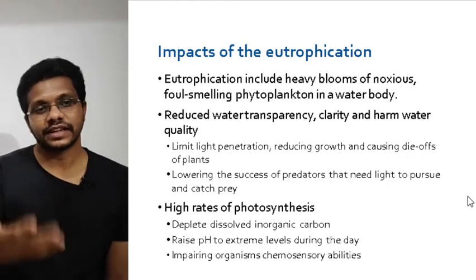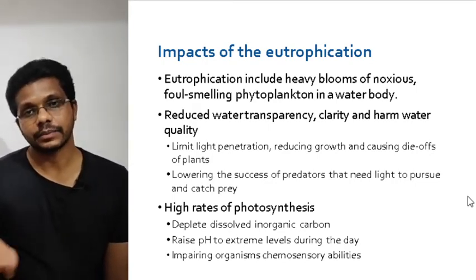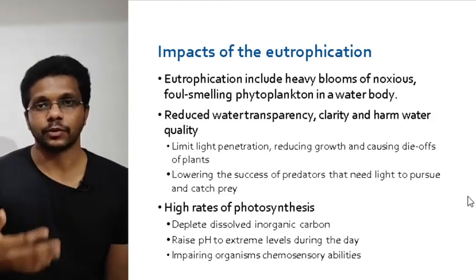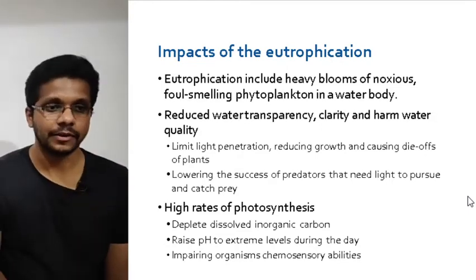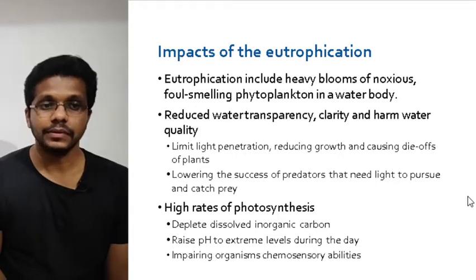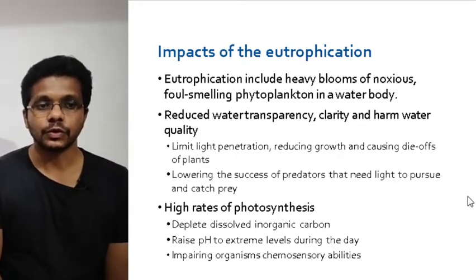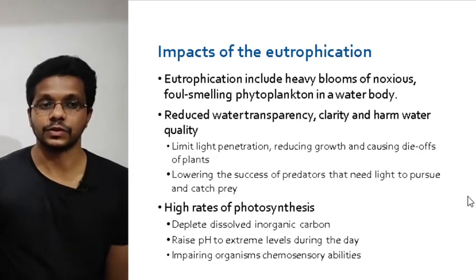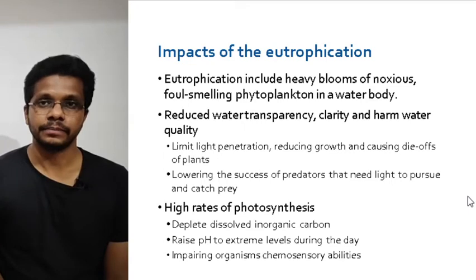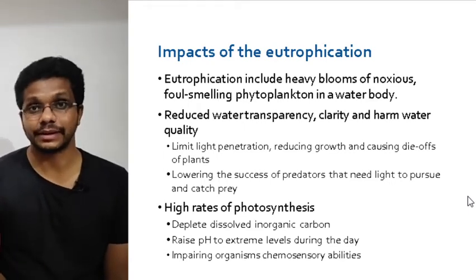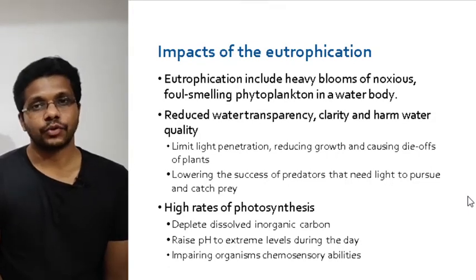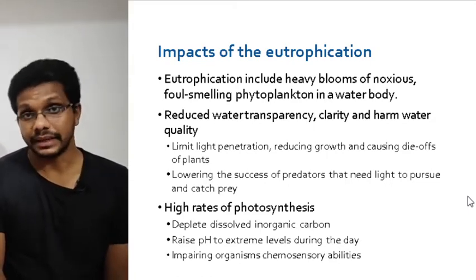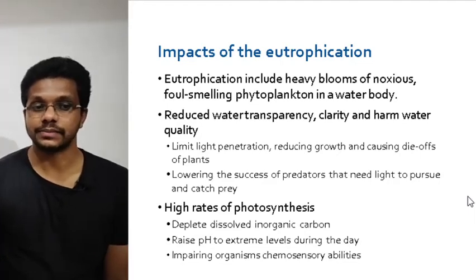Once nutrients accumulate in the water, they promote the growth of algae. This algae accumulates across the surface of the lakes, harming water quality and reducing water transparency. The algae limits light penetration, reducing the growth of and causing die-off of aquatic plants. The high rate of photosynthesis by algae depletes dissolved inorganic carbon, raises the pH of the lake, and impairs organisms' chemosensory abilities.